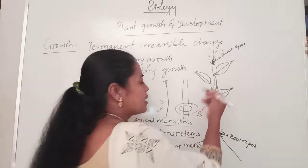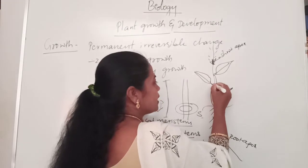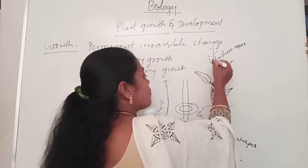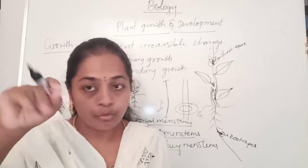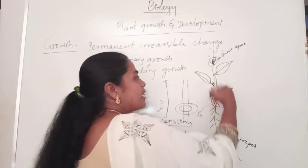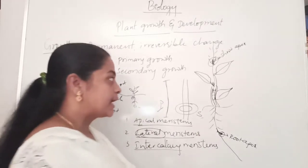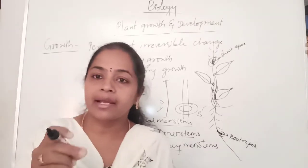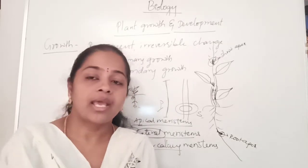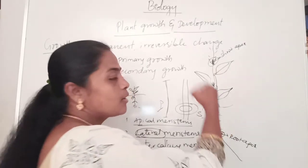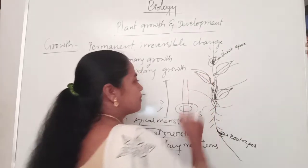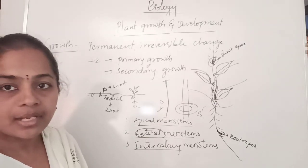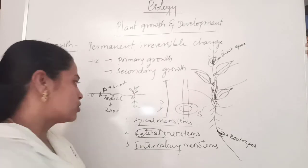There is also the intercalary meristem. These tissues are found in branches and increase growth of axillary buds. In that region, the primary growth takes place.